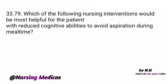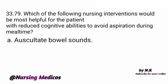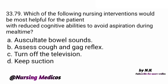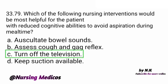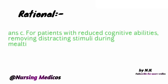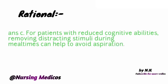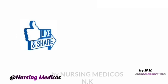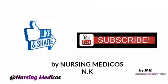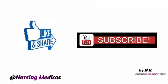Question 33: Which nursing intervention would be most helpful for a patient with reduced cognitive ability to avoid aspiration during mealtime? Options: A) Auscultate bowel sounds, B) Assess cough and gag reflex, C) Turn off the television, D) Keep suction available. Answer is C, turn off the TV. The rationale is for patients with reduced cognitive ability, removing distracting stimuli during mealtime can help avoid aspiration. Thank you — please like, share, and subscribe to YouTube Nursing Medicos.